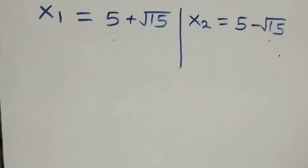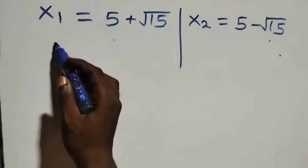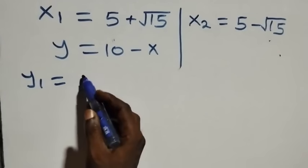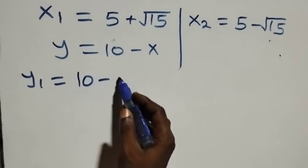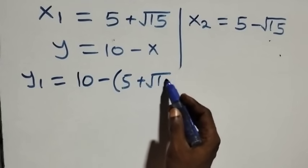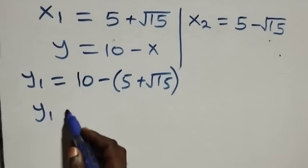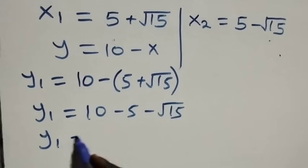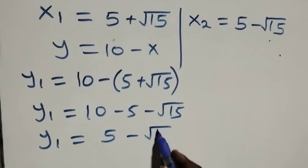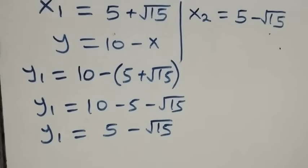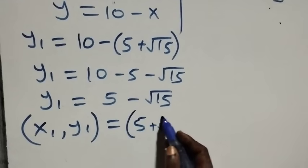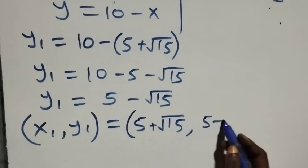Using equation three to find y: y equals 10 minus x. So y₁ equals 10 minus x₁, which is 10 minus (5 plus root 15), giving y₁ equals 5 minus root 15.